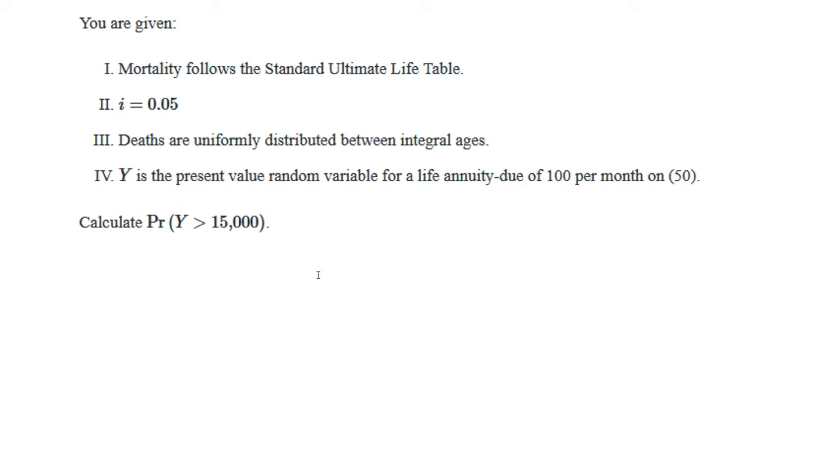In this problem we're given a life annuity due of $100 per month at age 50. We have UDD and can use a standard ultimate life table. Interest rate is 5% and we want to find the probability that Y is greater than 15,000.